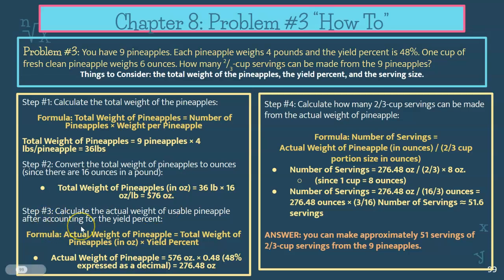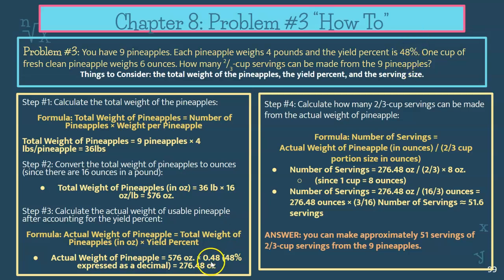Then go to step three and calculate the edible portion quantity. You have a total of 576 ounces from step two. Multiply it by the yield percent, which is 48%, expressed as a decimal, 0.48, and you get 276.48 ounces of edible portion pineapple.